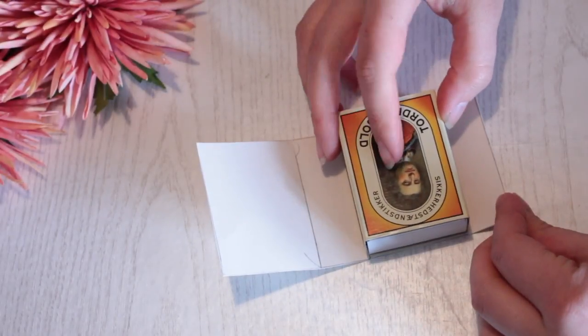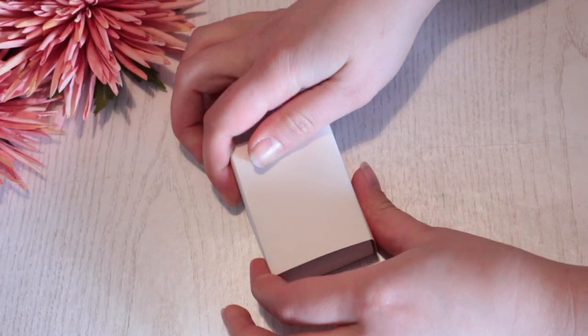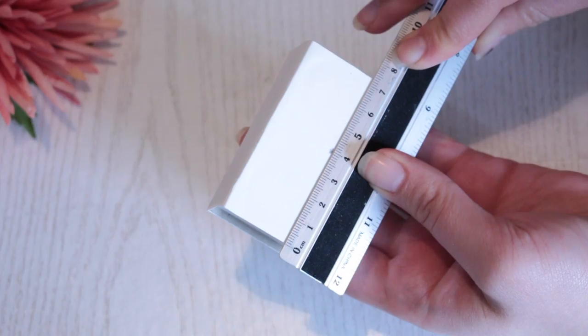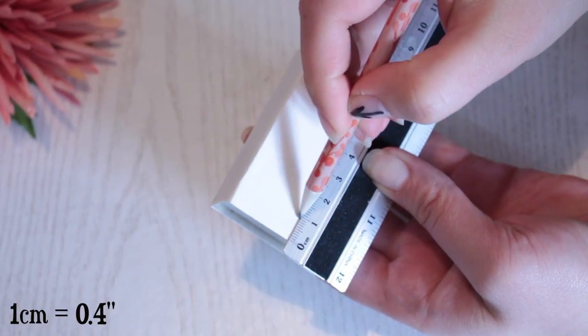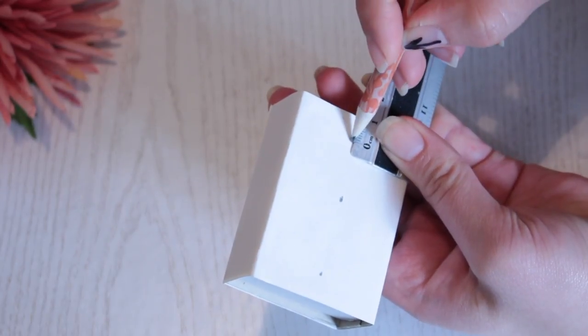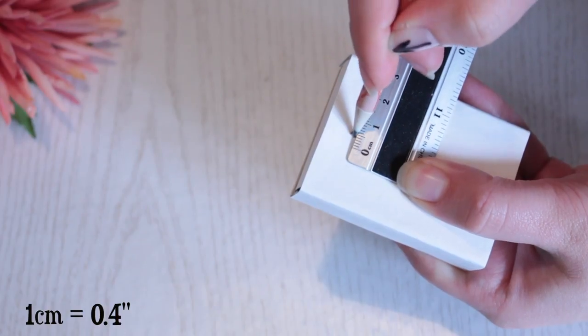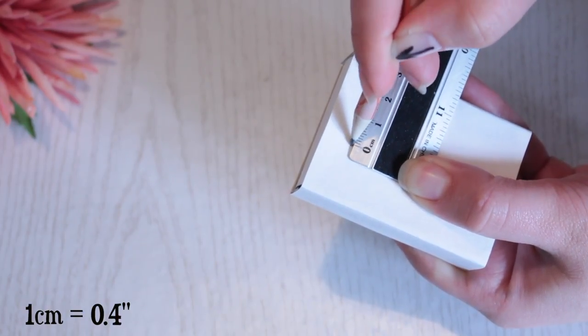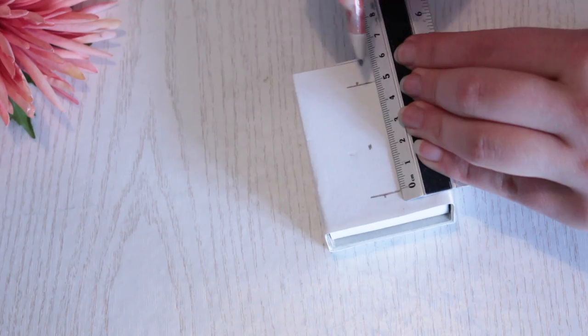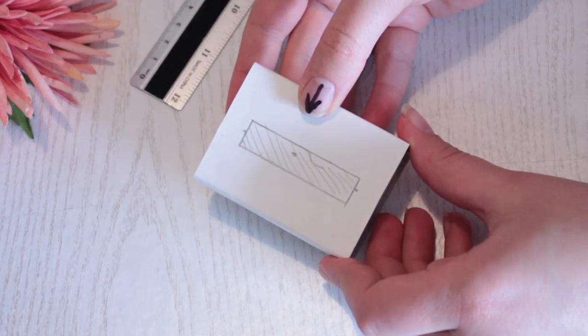Now just like the previous ones, you need to cover your matchbox to get this project started. Now find the middle of your matchbox and make a mark. Then measure one centimeter inwards from the edge of the matchbox and make a mark. Do this on the other end as well. Now place the marking on the point five centimeters on the ruler and then make a line that's one centimeter. You need to repeat this on the other end as well. Now connect the two lines and create a rectangle.